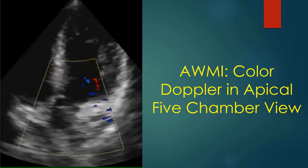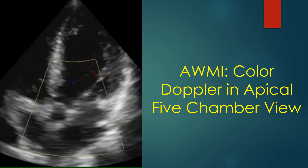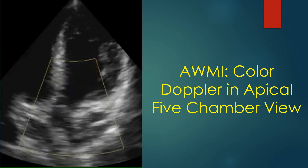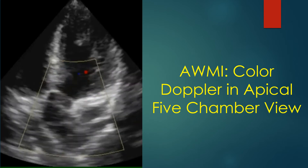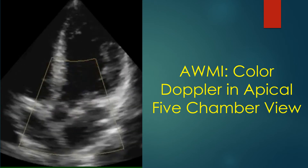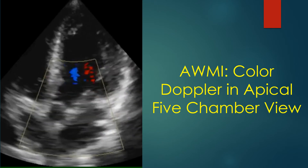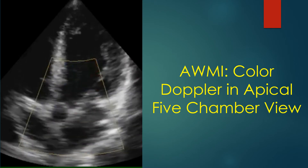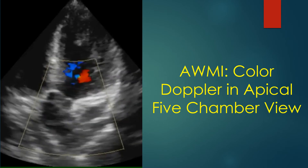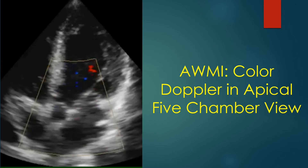Apical five-chamber view with colour Doppler imaging shows the aorta and aortic valve in addition to the four cardiac chambers. Blue flow away from the transducer is seen in the left ventricular outflow tract and proximal aorta.